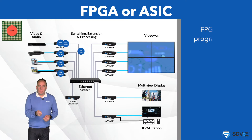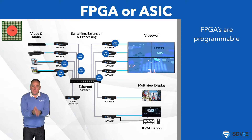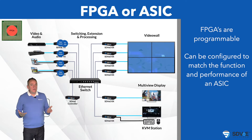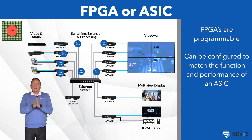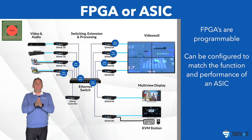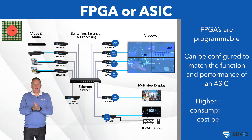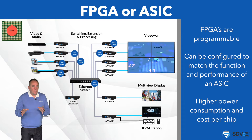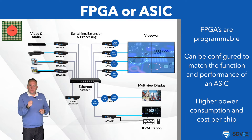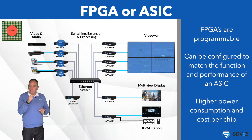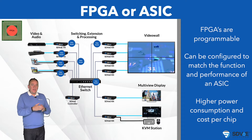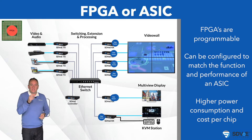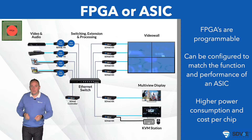FPGAs are programmable and they can be configured to match the function and performance of an ASIC. But this configurability means more power consumption and a much higher cost per chip. There's another very important consideration a manufacturer needs to make when deciding between FPGAs and ASICs: when it's time to take the product to market.